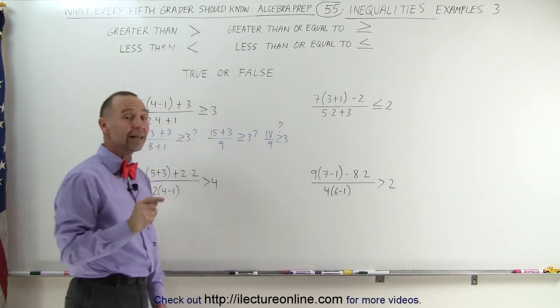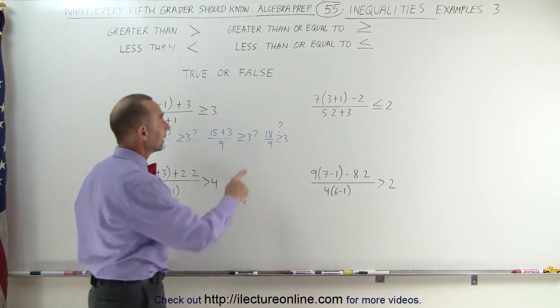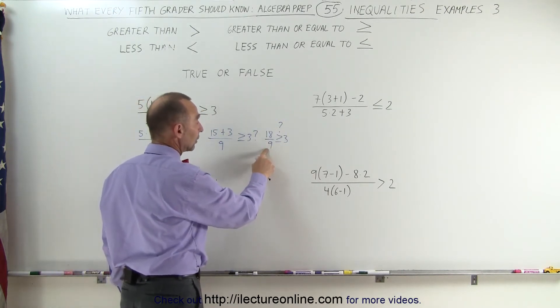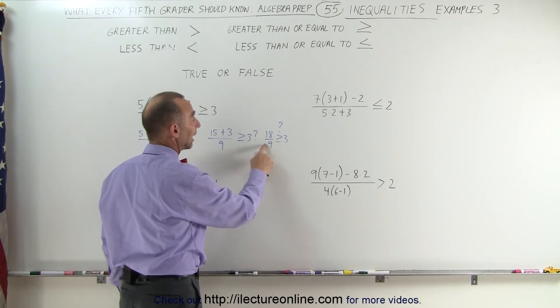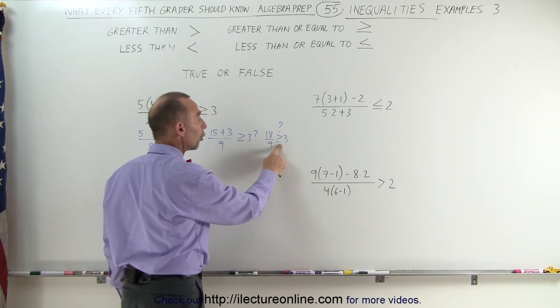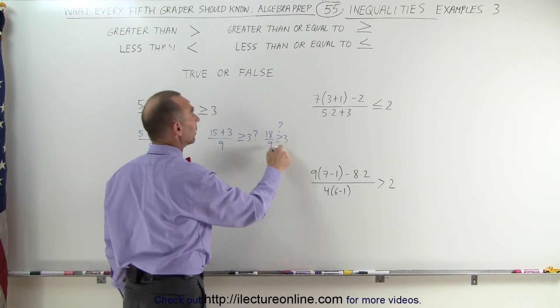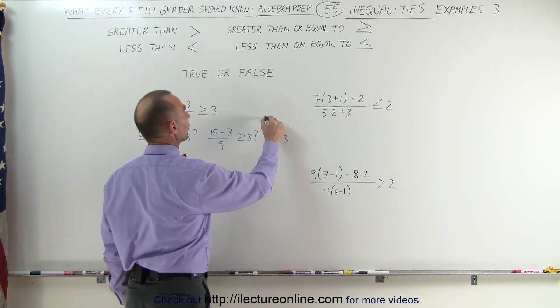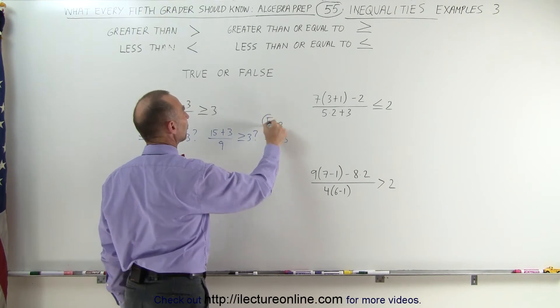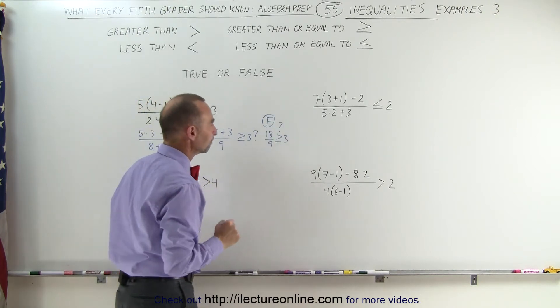We can see that 18 divided by 9 is only 2, and 2 is not greater than or equal to 3. Therefore, this is a false statement.